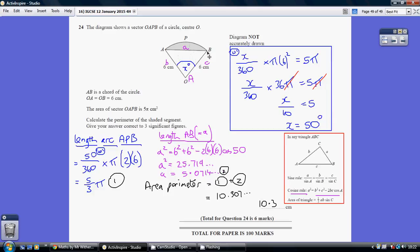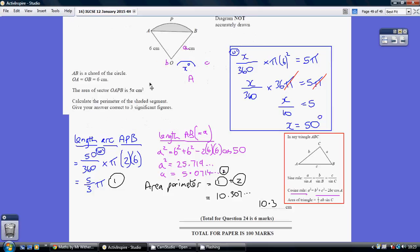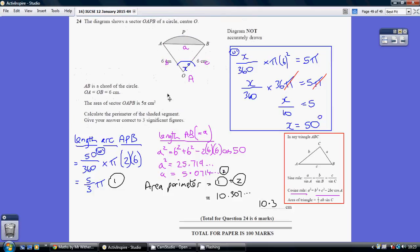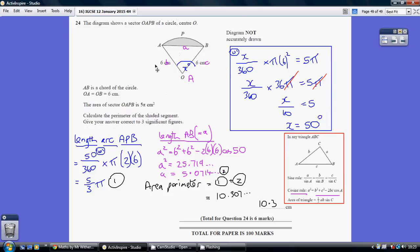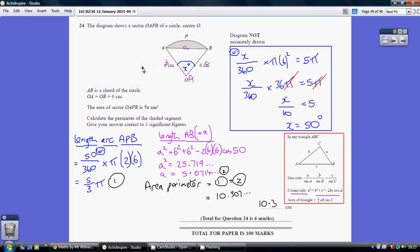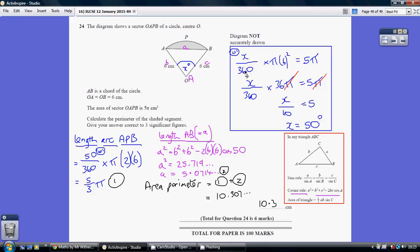Now, this is a part of a circle, it is x degrees worth of a circle, so we can work out what x is by just using the formula for the area of a sector. So, our angle, which is x, divided by 360 degrees, multiplied by the area as if it was a whole circle, so πr², π times 6 times 6, so this is the area of the sector, and we're told this equals 5π.